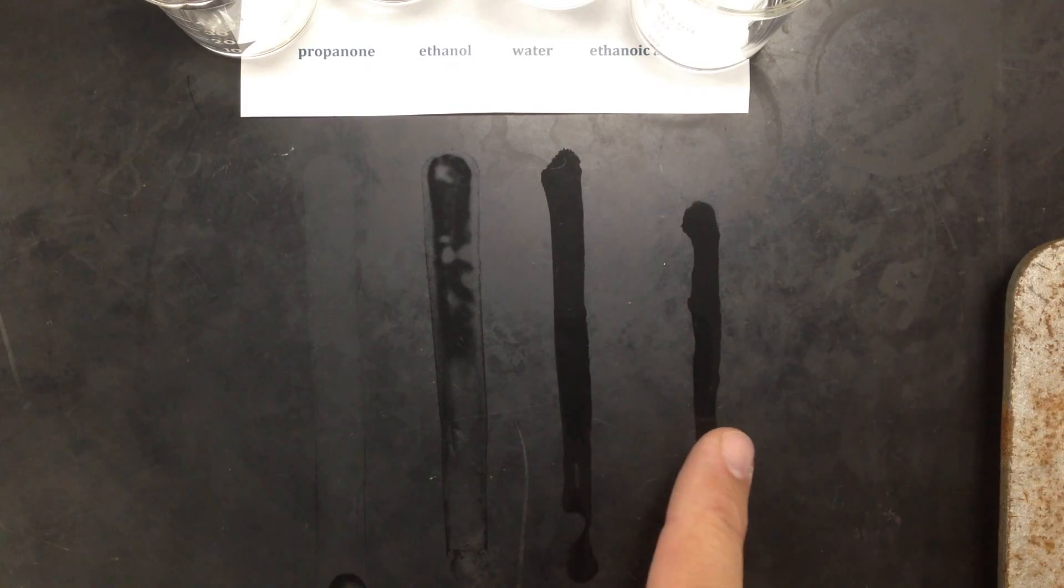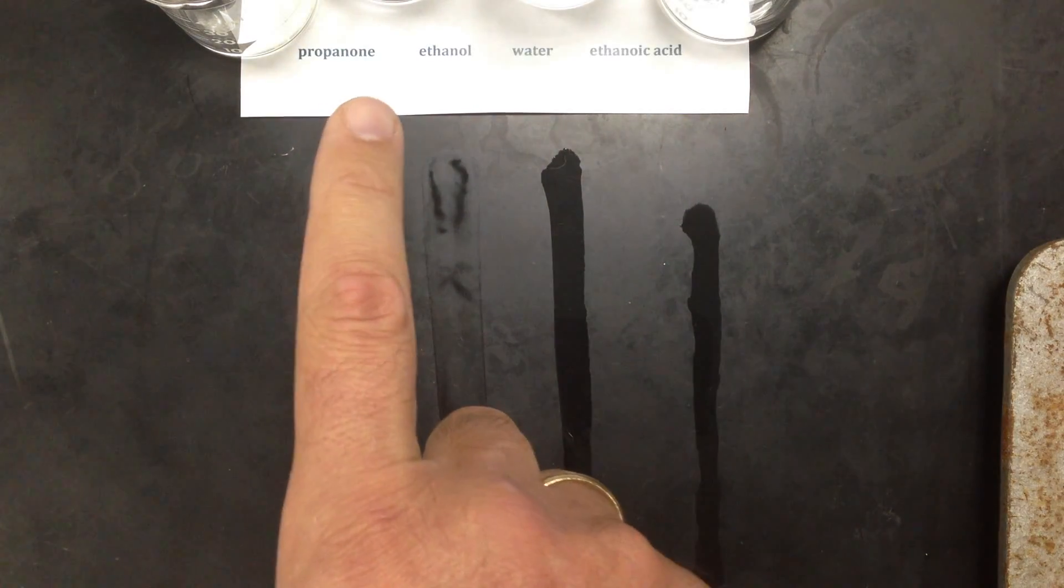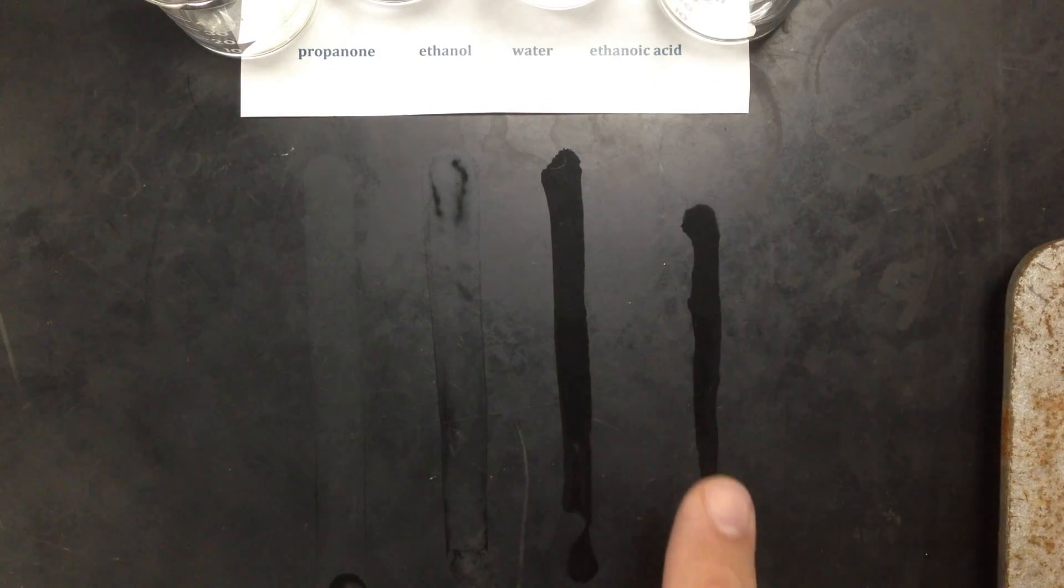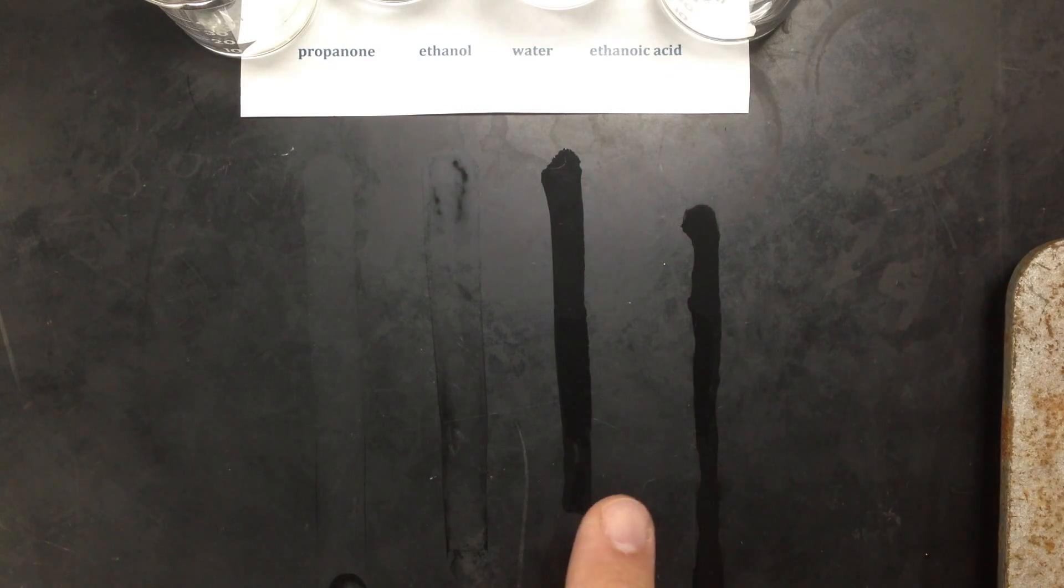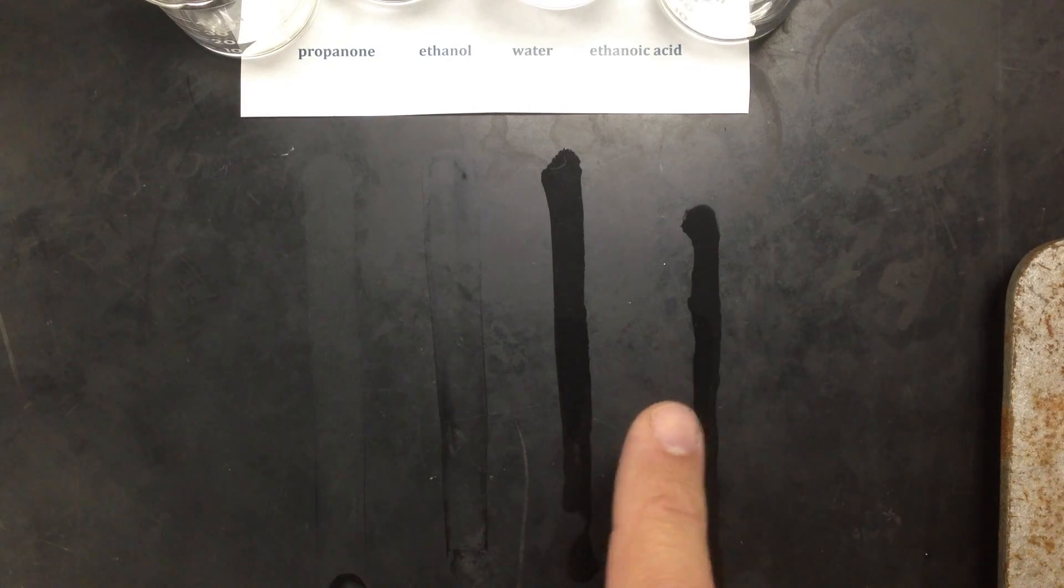And you can see that the ethanoic acid, that's the last line here, is actually beading up a lot more than the water. So we can say the attractive forces are increasing as I go from propanone to ethanol to water to ethanoic acid. And if I let this video play longer, water would evaporate next and then the ethanoic acid.